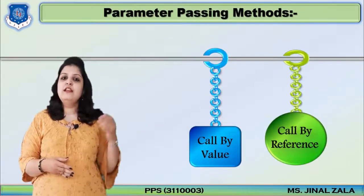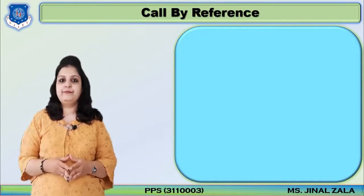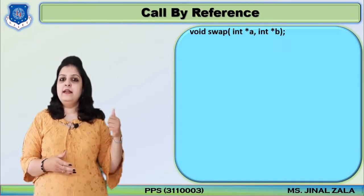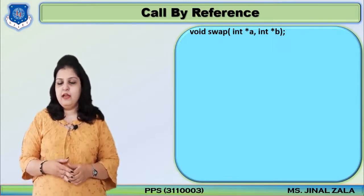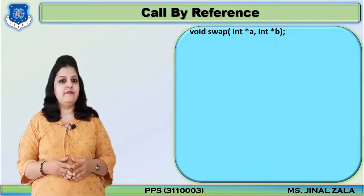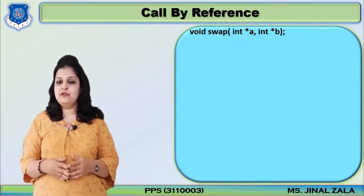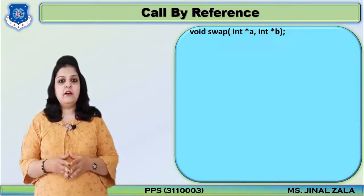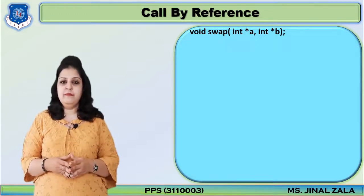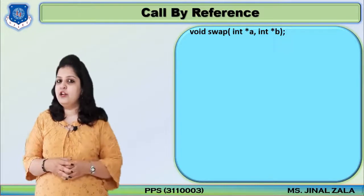Now if I want to change the values of the actual parameters as well, I have to use the second method — call by reference. In the function declaration I now write: void swap(int *a, int *b). The asterisk indicates that these are pointer variables. A pointer variable is used to store the address of another variable. By using a pointer, we can store the address of another variable and also access the value at that particular address. We will learn the pointer module in detail in upcoming videos.